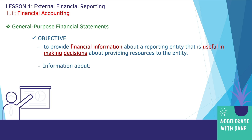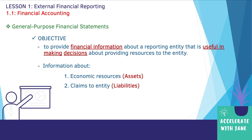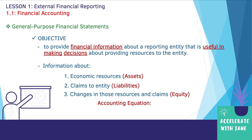The information provided covers three things: first, economic resources — in other words, assets; second, claims to the entity, or liabilities; and third, the changes in those resources and claims, or simply equity. I'm also going to discuss the accounting equation: Assets = Liabilities + Equity. Let me explain the accounting equation in layman's terms.